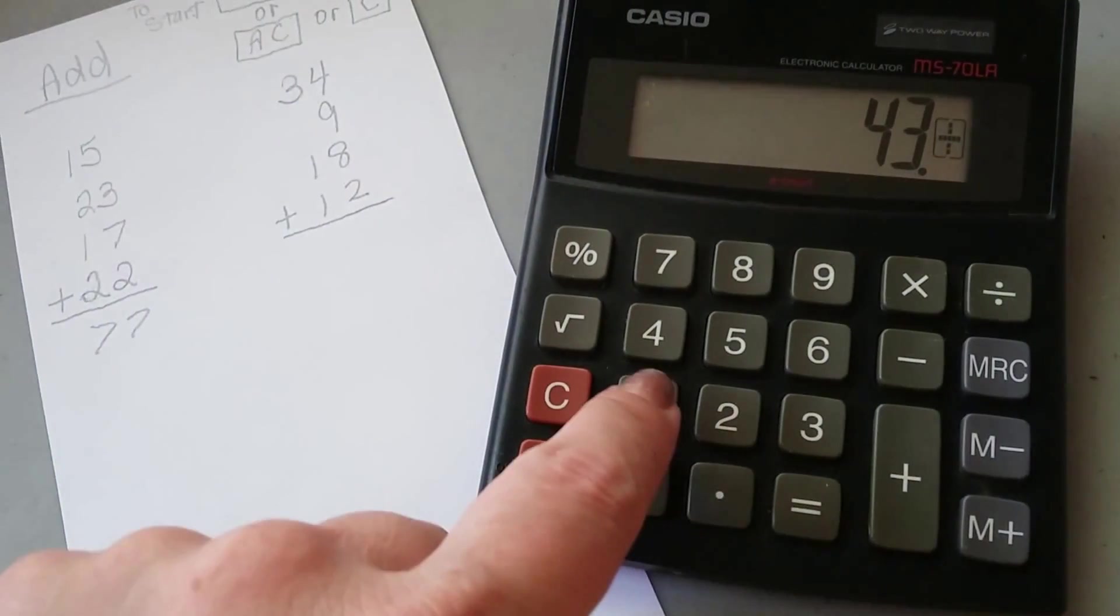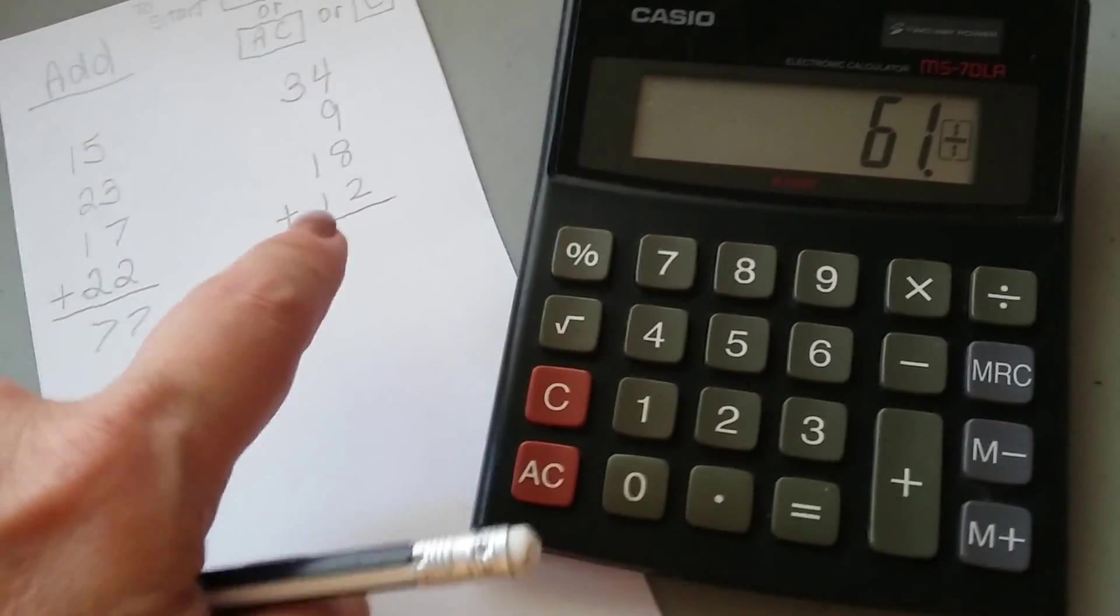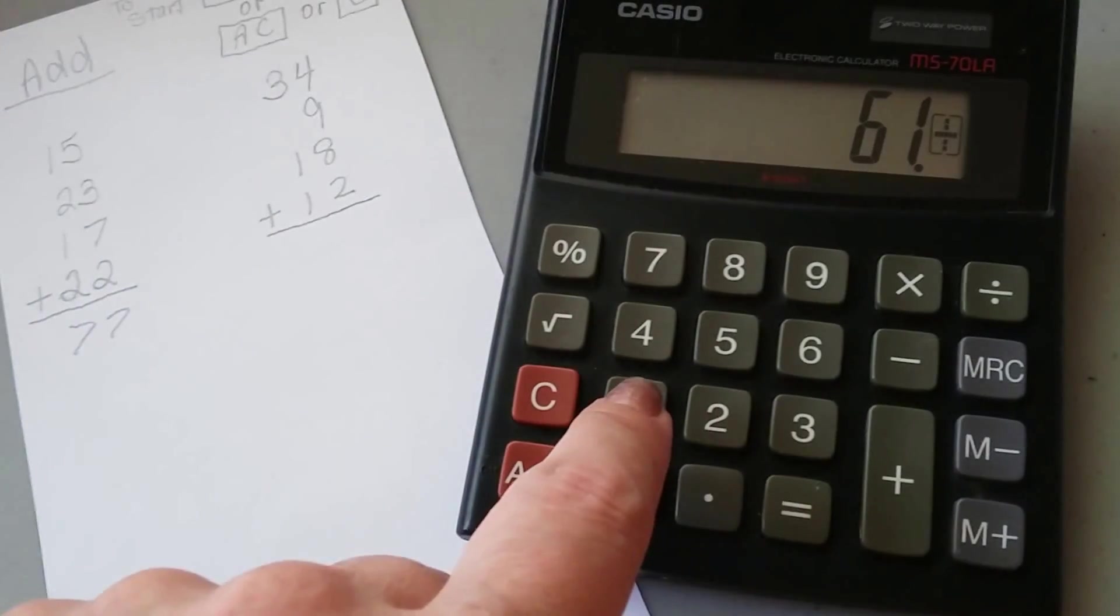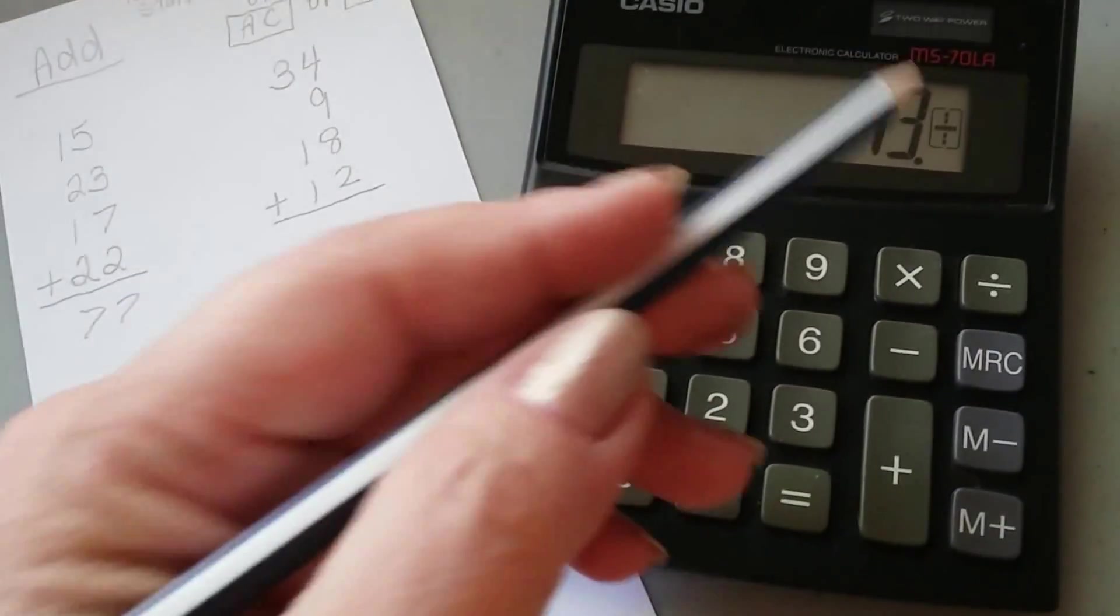The 18 is a 1 and an 8. 1, 8 for 18 plus. And 1, 2 for the 12. 1, 2 plus. And that gives us 73.